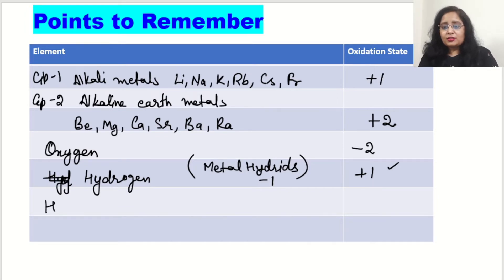Next comes in the list is halogens. Their oxidation state in normal condition is minus 1, and fluorine is always having minus 1, that is fixed. For chlorine, bromine, iodine, rest of the halogens may show variable conditions, but fluorine is always having fixed minus 1.